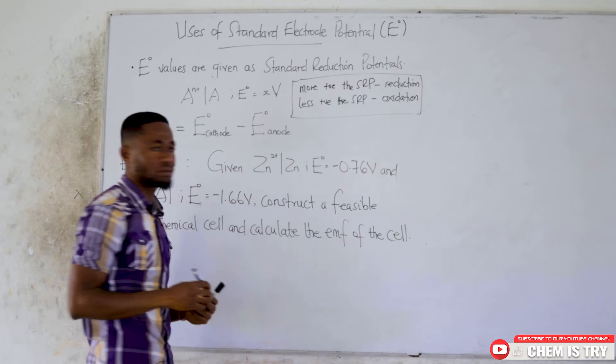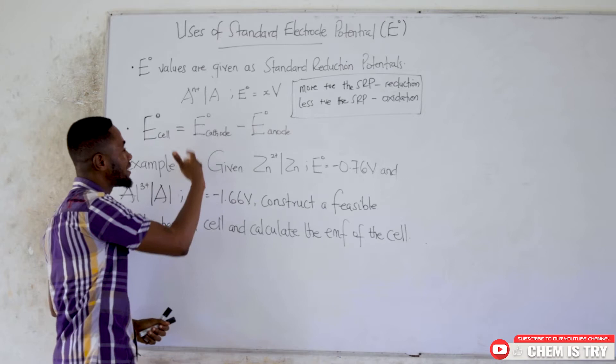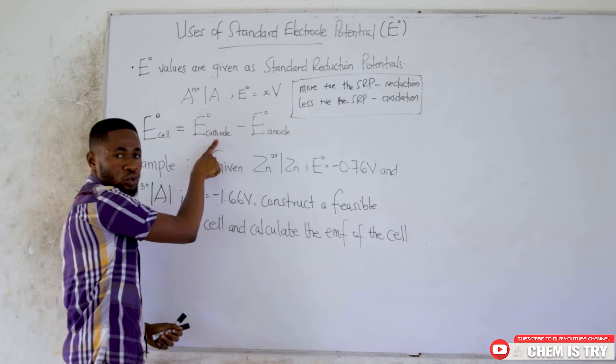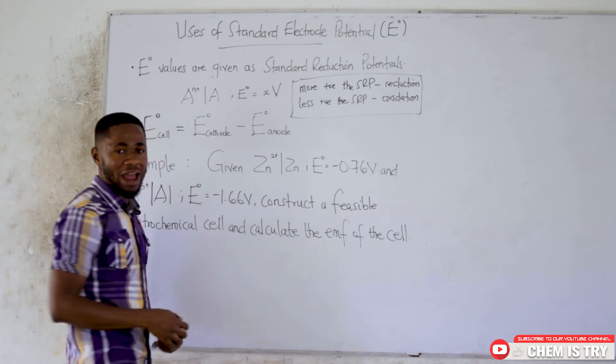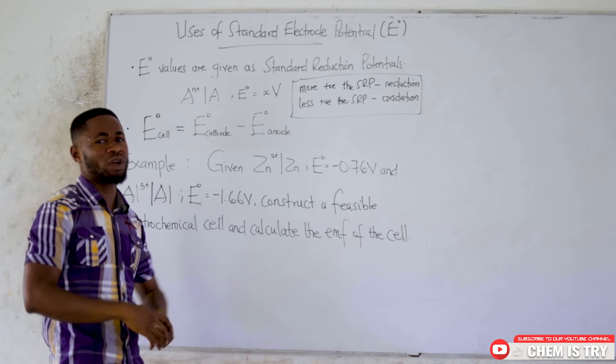We also established that whenever we have a galvanic or voltage cell, the total EMF of the cell is given by the difference in the standard reduction potential value of the cathode and the standard reduction potential value of the anode.